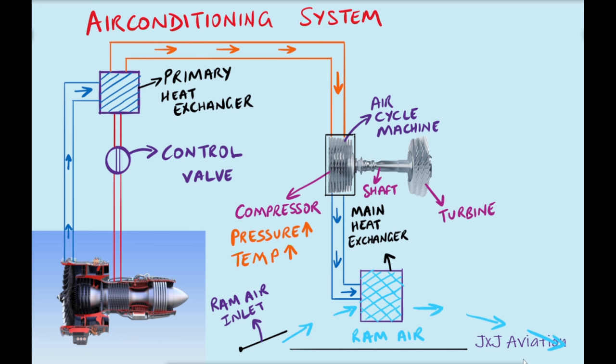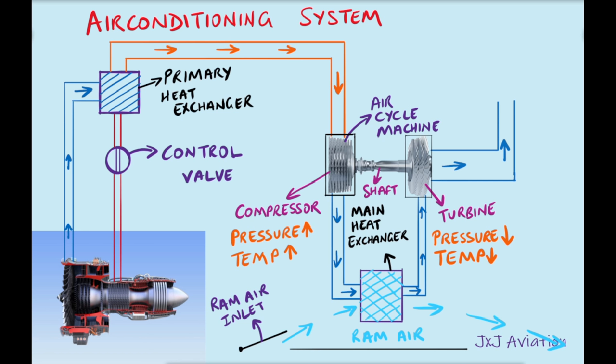The air then enters the turbine section of the air cycle machine. Here the air gets expanded, which means the pressure of the air reduces and with it the temperature reduces further. This is the cold conditioned air which is sent into the aircraft cabin and the cockpit.